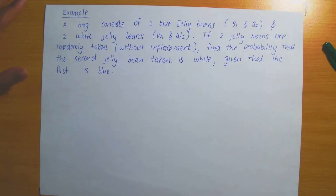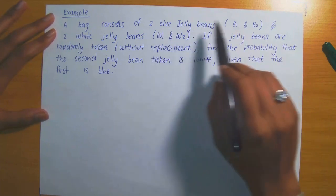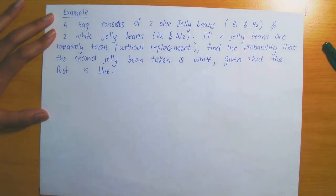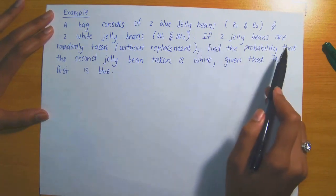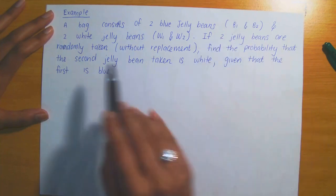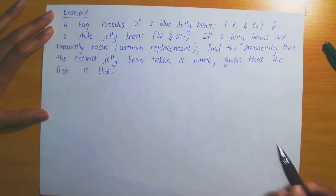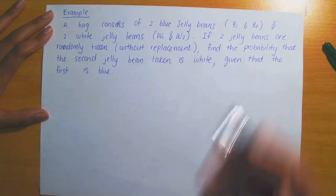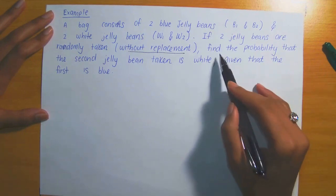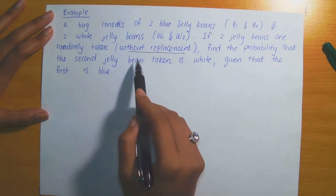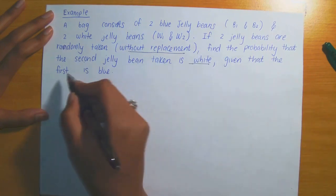We have a bag consisting of two blue jelly beans and two white jelly beans, denoted B₁, B₂ and W₁, W₂ respectively. If two jelly beans are randomly taken without replacement — meaning we're not putting them back, so there are no repeats — find the probability that the second jelly bean is white, given that the first is blue.